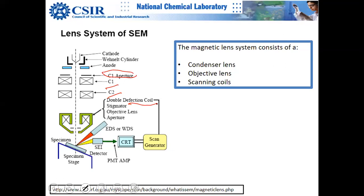You have double deflection coils. The stigmator is a very important element — stigmatism correction is one of the most important things learned during hands-on training on SEMs. You learn how to fix the stigmatism and all related correction procedures.